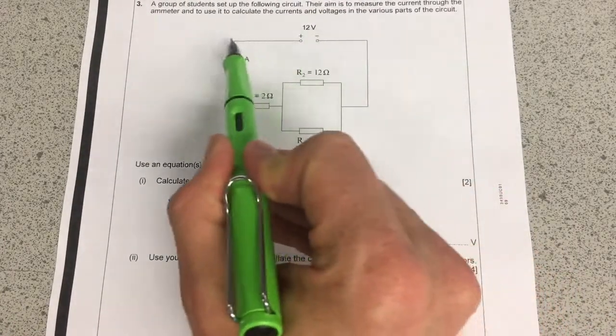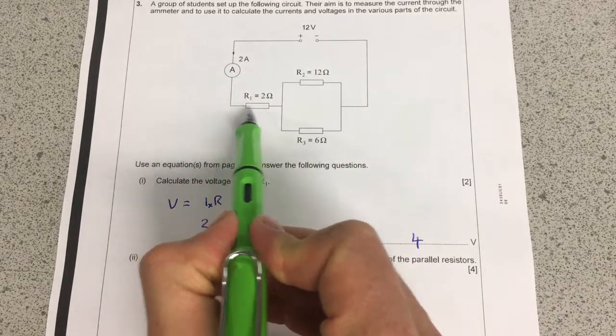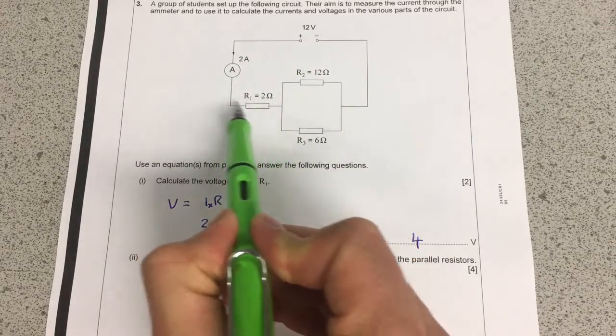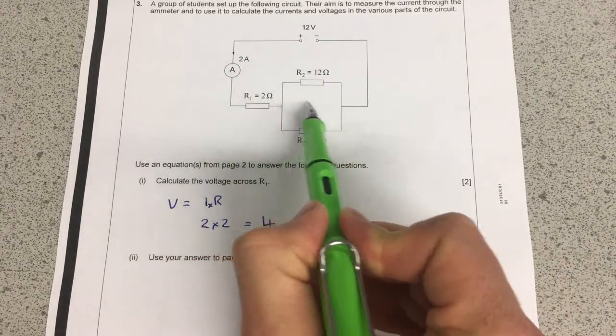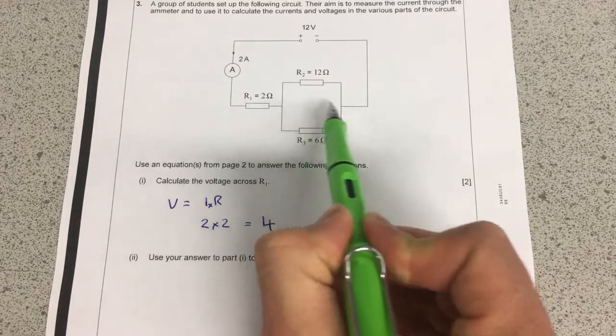The total voltage across the circuit is 12, and we've just worked out that 4 of them get used up here by this resistor. That means there must be 8 volts across these two resistors here.